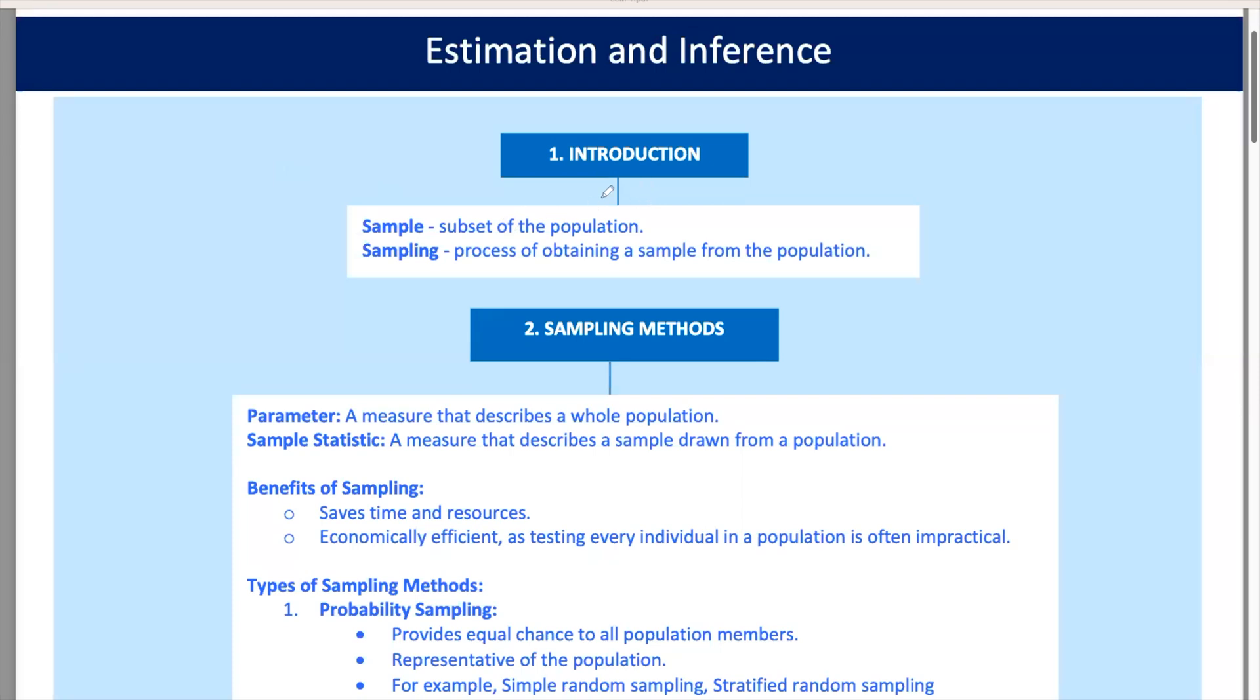All right, let's kick things off with some basics. When analysts want to understand a population, they often use a subset called a sample. Think of it as taking a small slice of a big cake to guess what the whole cake tastes like. A sample is just a subset of a population. Imagine you have a jar full of jelly beans. That's your population. Now, if you take a handful of jelly beans from that jar, that's your sample.